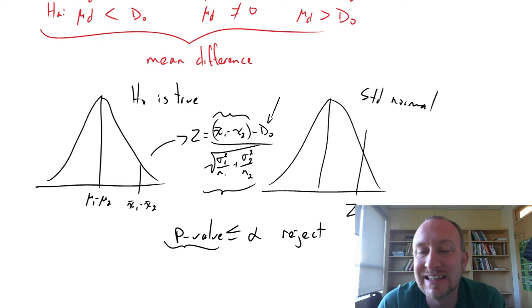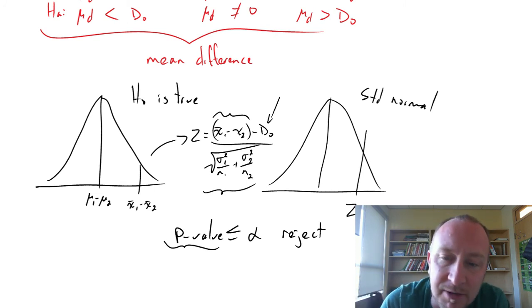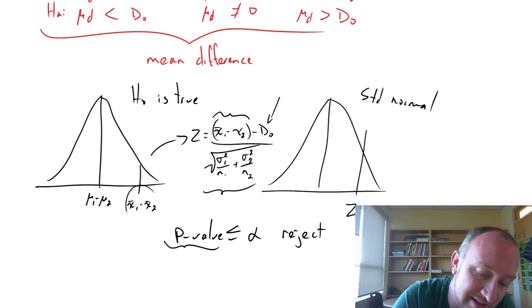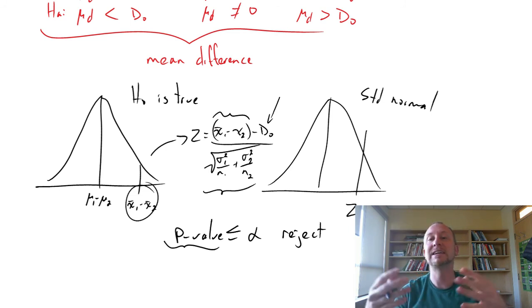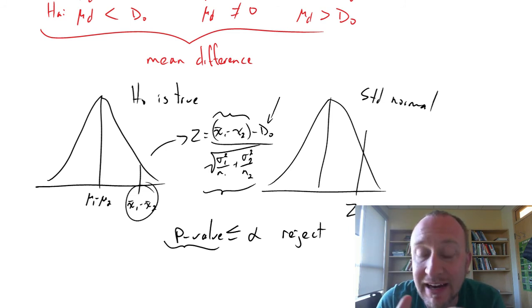So if that p-value is very small, that means that if we reject, and if the null happens to be true, it's very unlikely that we will have committed a type 1 error, meaning that that particular sample, or that particular test statistic, is very unlikely to have come from that hypothesized distribution, probably came from another distribution, and so that's why we say a small p-value provides evidence against the null hypothesis.